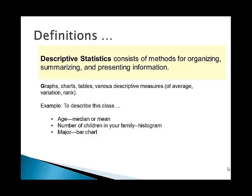Statistics is divided into two major subsets. The first we call descriptive statistics, and the second we refer to as inferential statistics. These two subsets are not the same size — descriptive statistics is much smaller and easier to learn than inferential statistics. It nevertheless is the place we start. It consists of methods for organizing, summarizing, and presenting information — using charts, graphs, tables, and various descriptive measures such as averages and measures of variation, or rankings.